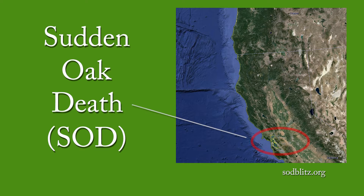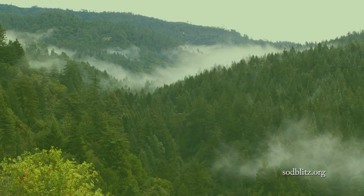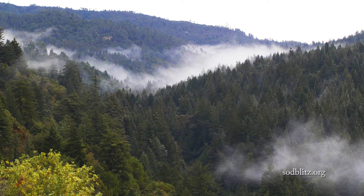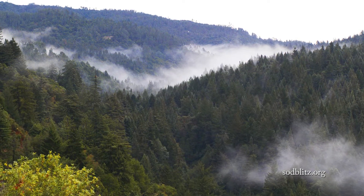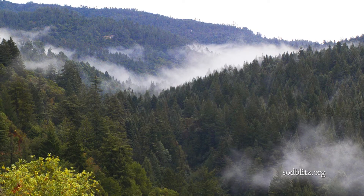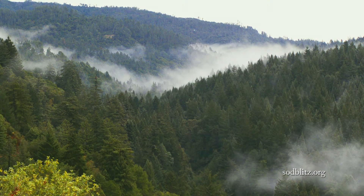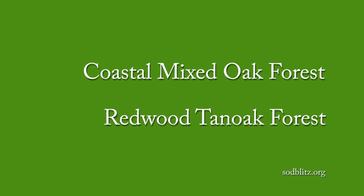Sudden Oak Death is an exotic disease that arrived in California in the 80s, and when it arrives in a site it can kill almost all of the oaks in about just a decade. The SOD pathogen was introduced multiple times in Northern California around the greater San Francisco Bay Area and at least one time in Southern Oregon. From these original introduction sites the pathogen is spreading, and almost all findings are in two types of habitats: the coastal mixed oak forest and the redwood tan oak forest.